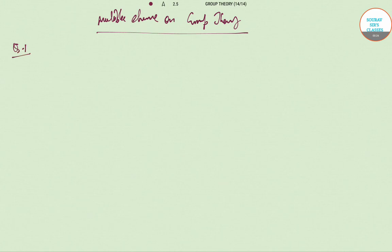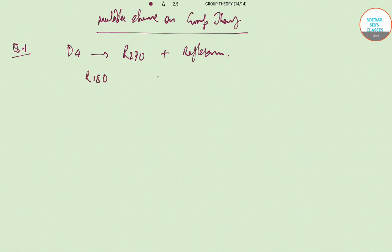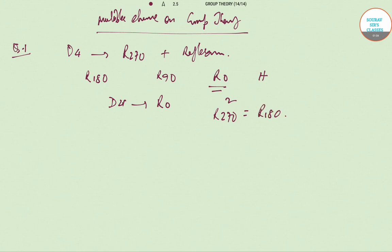The first question: in a subgroup of D4 that contains R270 and a reflection, which elements must it contain? Every subgroup always contains the identity, so the subgroup of D4 must contain R0. By closure, it must contain R270 squared, which is R180.